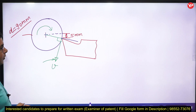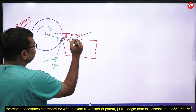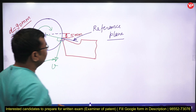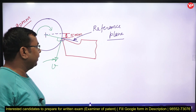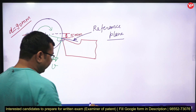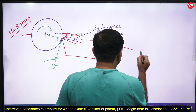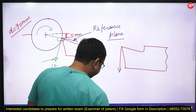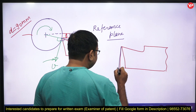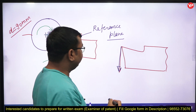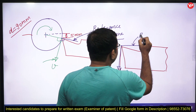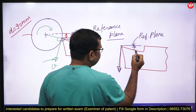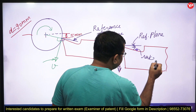The normal to the cutting velocity is the reference plane. This is called the reference plane, and we already know that the rack angle of the tool is always measured from the reference plane. Suppose we draw the tool again — this is our tool, and this is the cutting velocity vector when the tool is placed at the center of the workpiece. Then this is our reference plane.